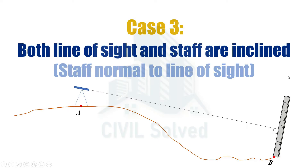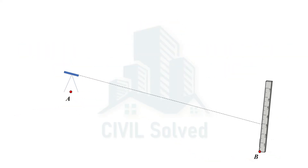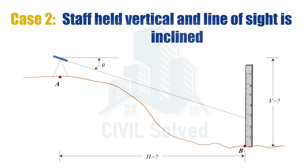Hello everyone. In this video I am going to present case number three of the CDR method of tachometric surveying, in which the line of sight and staff are both inclined — in other words, the staff is normal to the line of sight. Now, if you compare case number three with case number two...